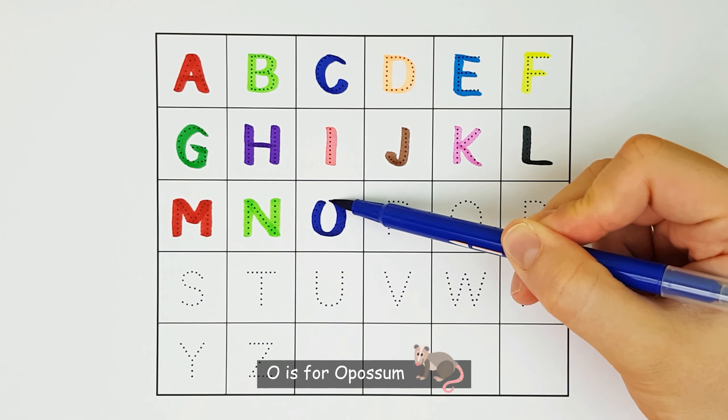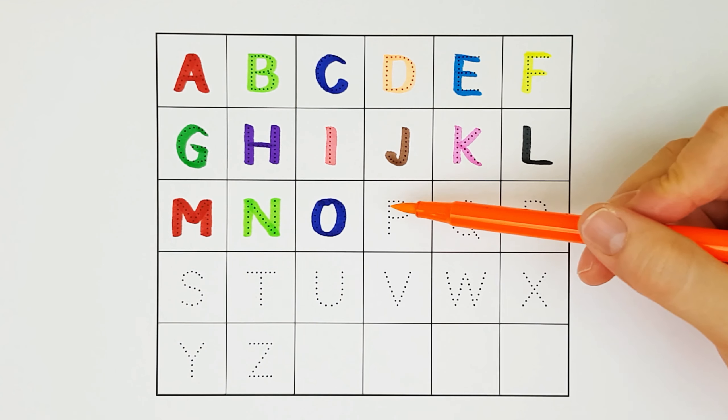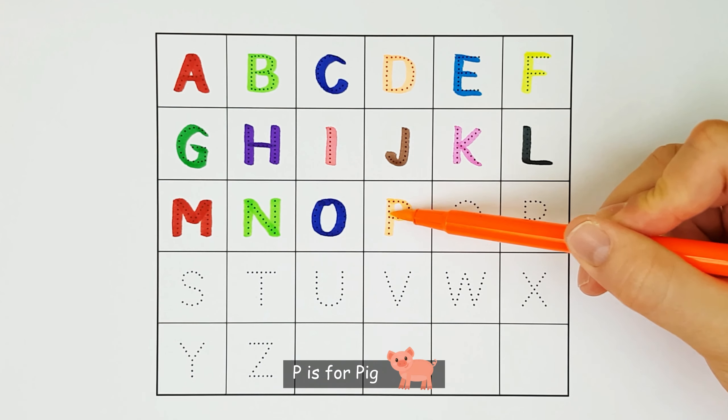O. O is for opossum. O. P. P is for pig. P.